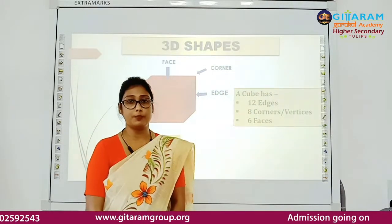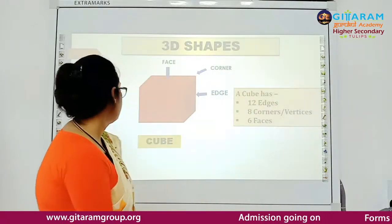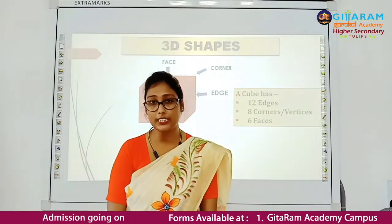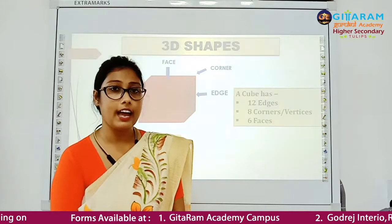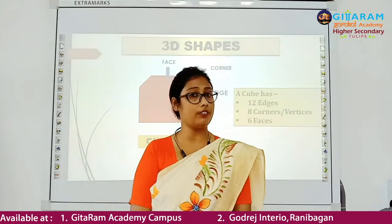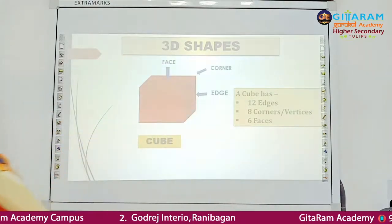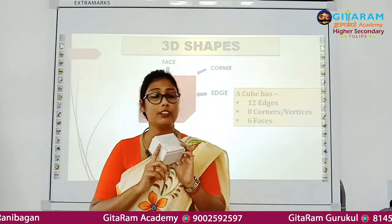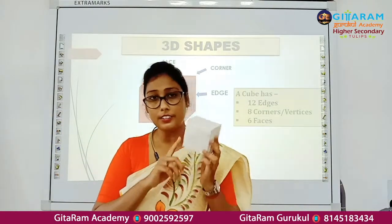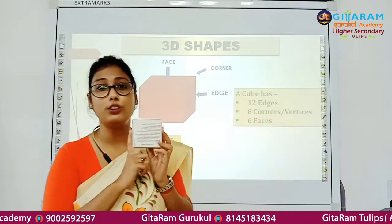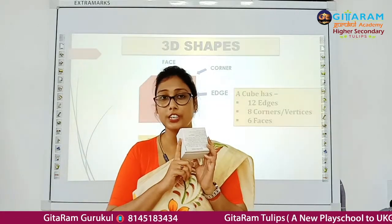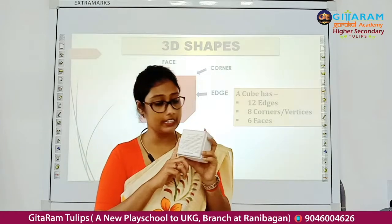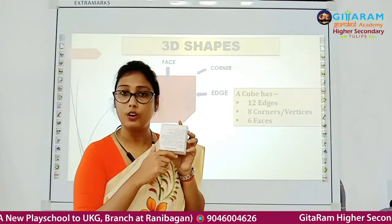Our first 3D shape is cube. A cube has 12 edges, 6 faces, and 8 corners or vertices. This box looks like a cube. Let's count the edges — edges means these lines. So counting: 1, 2, 3, 4, 5, 6, 7, 8, 9, 10, 11, 12 — 12 edges.